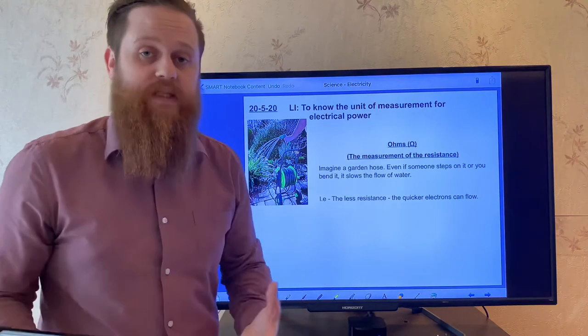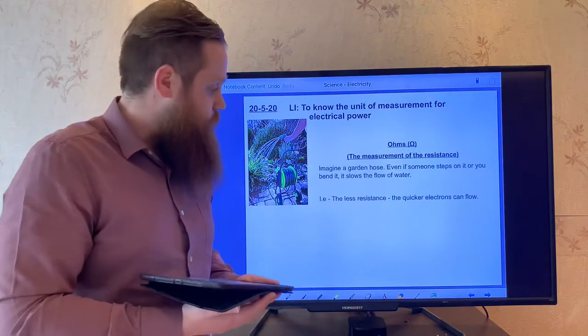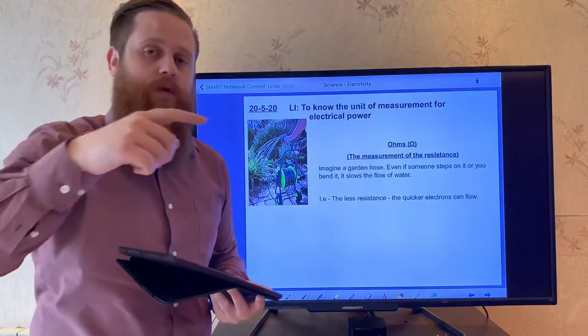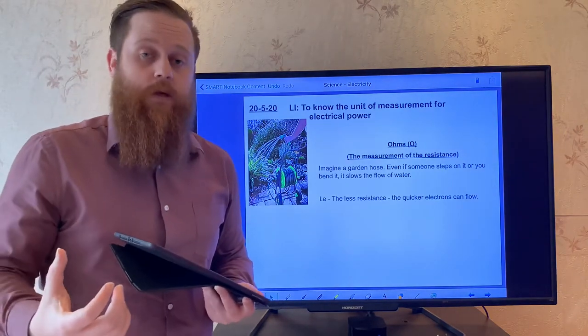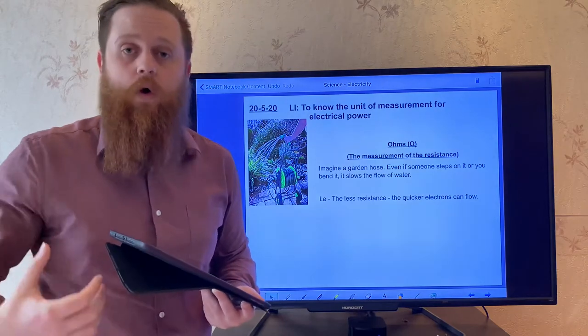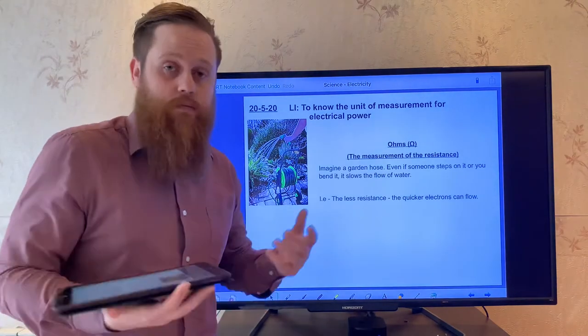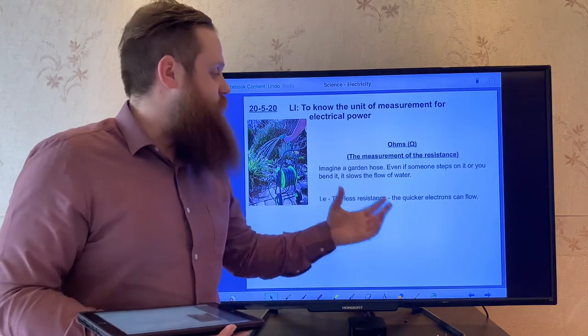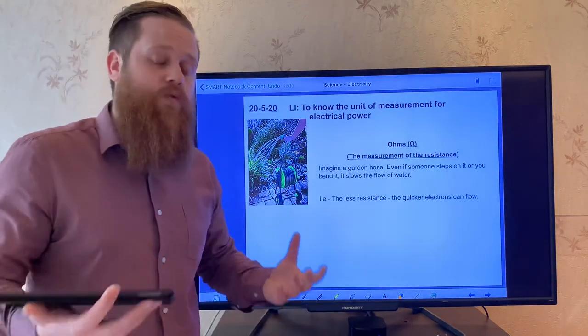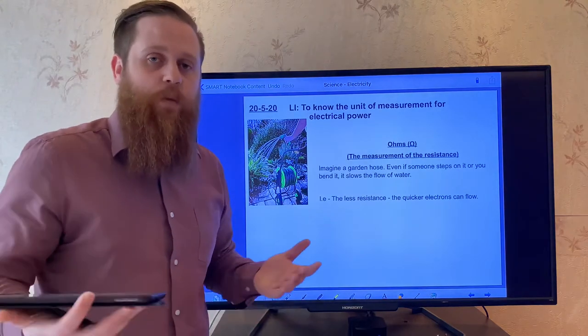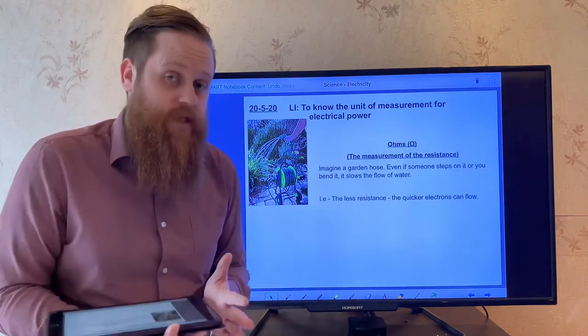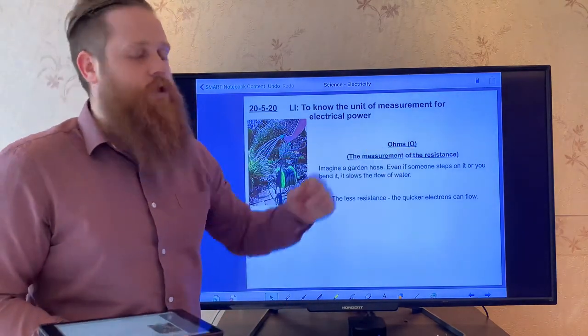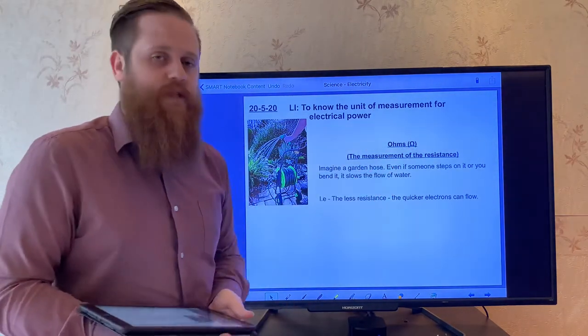And it's the same with electricity, on a circuit. The less resistance that there is, the quicker the electrons can travel around. But the more resistance there is, maybe with extra wire or many other different ways of creating resistance. The less resistance there is, the quicker the electrons can flow. The more resistance, the slower that they will flow. And we measure this resistance in ohms. And it's even got its own special little symbol. So ohms measures the resistance.